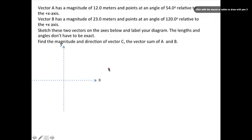Vector A has a magnitude of 12 meters and points at an angle of 54 degrees relative to the x-axis. So that's going to look kind of like this. Here is a 54 degree angle, and this is going to be 12 meters long. This is vector A.